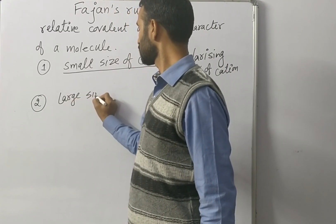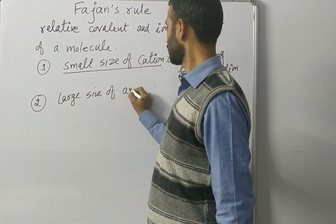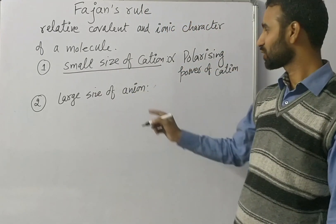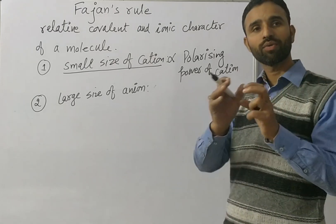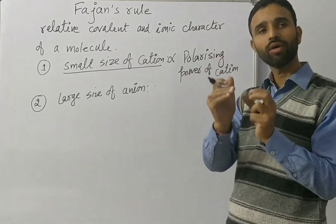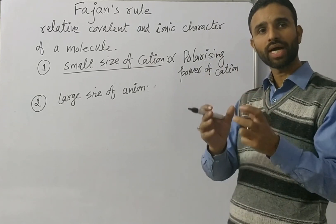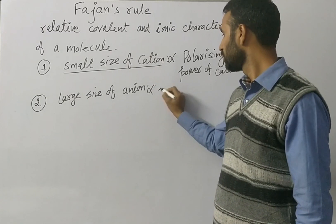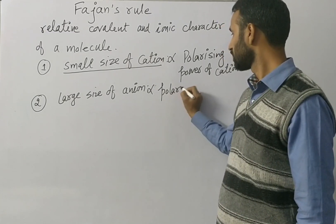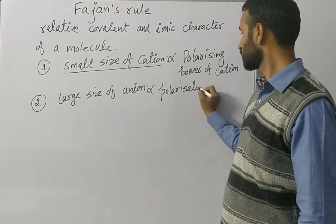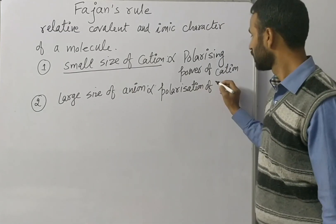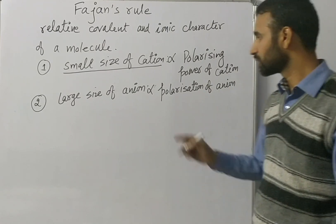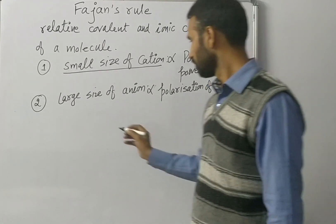Rule number 2: large size of anion. Larger the size of the anion, its hold on the electrons is less. So the cation can easily attract its electrons, and that is called polarization of the anion. More is the polarization of the anion, more is the covalent character.